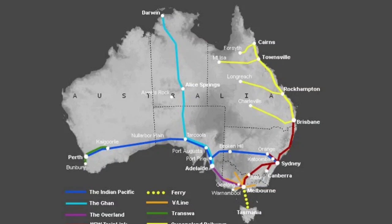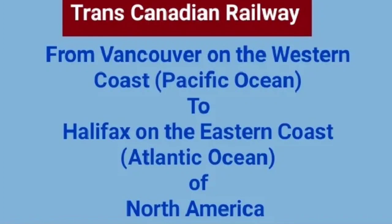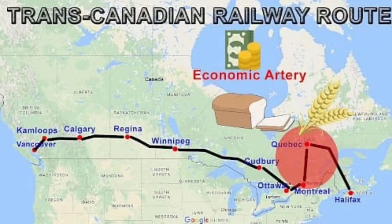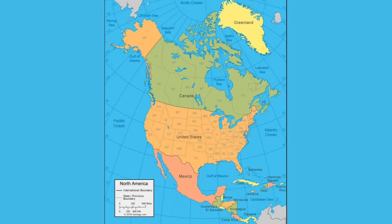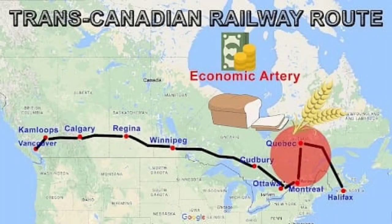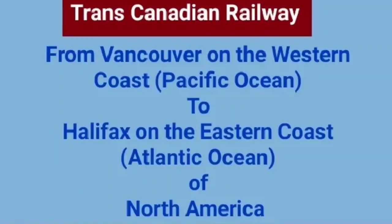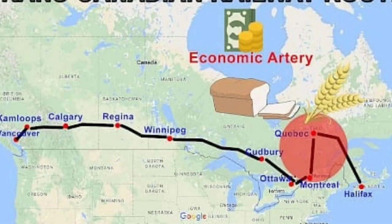The Trans-Canadian Railway is a very important transcontinental railway in the North American continent. It connects the Pacific coast in the west with the Atlantic coast in the east. On the Pacific coast, it connects Vancouver, Canada, with Halifax, which is on the eastern coast of Canada on the Atlantic Ocean.